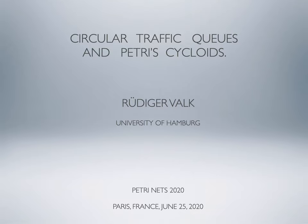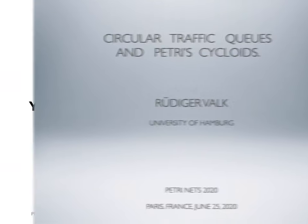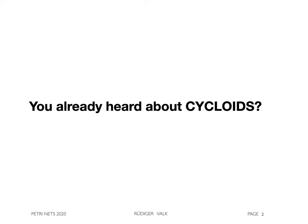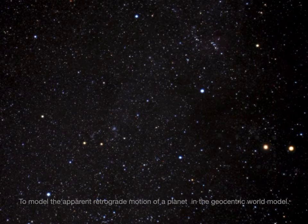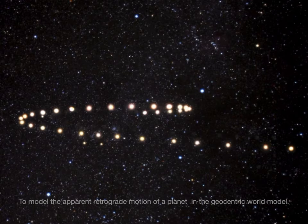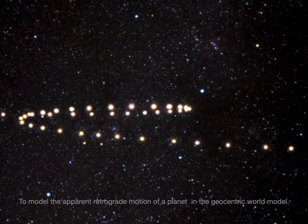My talk is on the modeling of circular traffic queues by cycloids. Maybe you already heard about cycloids? The notion is known from ancient astronomy. It has been used to model the apparent retrograde motion of a planet in the geocentric world model.